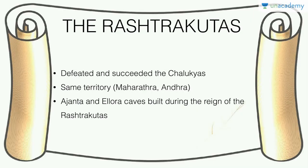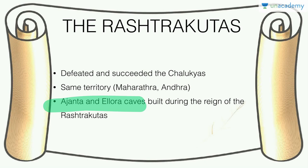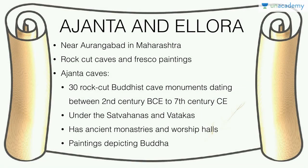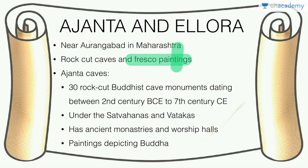The Rashtrakutas defeated and succeeded the Chalukyas in the same territory of Maharashtra and Andhra. The Ajanta and Ellora caves were built during the Rashtrakuta reign. Ajanta has 30 Buddhist rock-cut cave monuments dating from the 2nd century BCE to the 7th century CE, built under the Satavahanas and Vakatakas, featuring ancient monasteries, worship halls, and paintings. Ellora is a rock-cut monastery-temple cave complex representing Jainism, Buddhism, and Hinduism, constructed around 600 to 1000 CE.